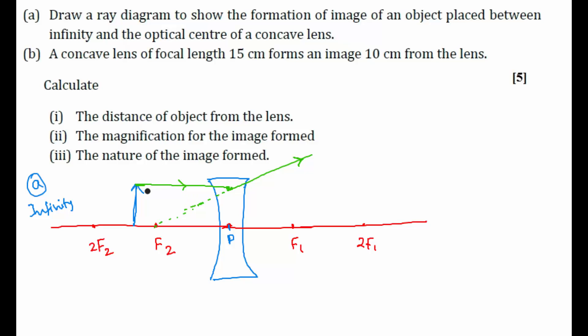The second ray I will take is a ray passing through the pole. A ray which passes through the pole — after refraction, how will it go? It will go undeviated, like this.